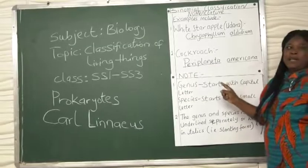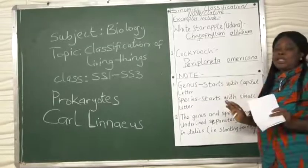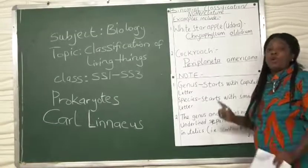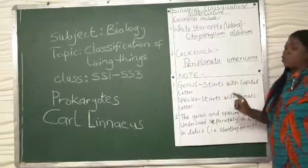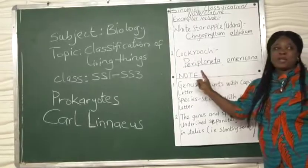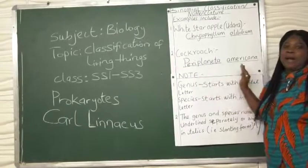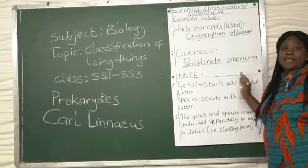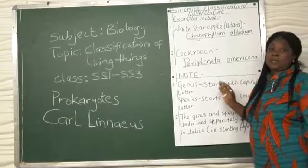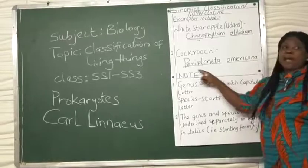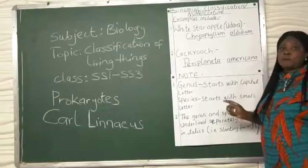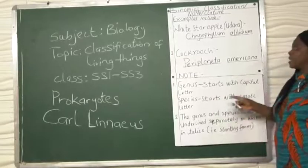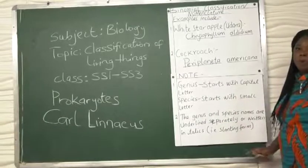When you have written the species name, when you have written the binomial nomenclature, you must underline the genus name separately and the species name separately. If you don't do that, you lose marks in exams. It is either you underline them or if you don't want to underline, you write them in italics. That means in slanting form.